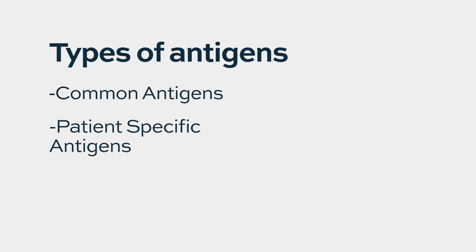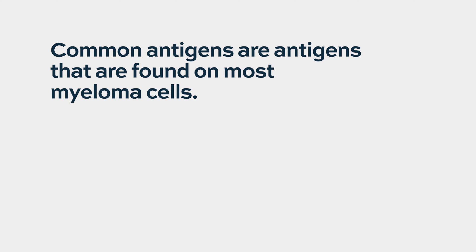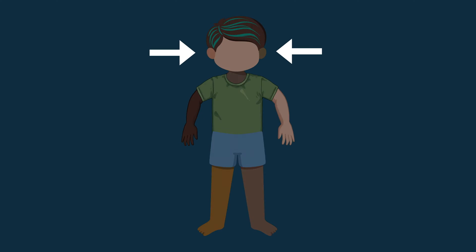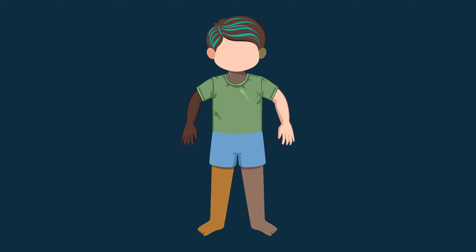There are common antigens, and then there are patient-specific antigens. The common antigens would be like saying, if we take all myeloma patients, roughly 60-70% of them have things in common. That would be like saying if we take a population of individuals, they all have a head and two arms and two legs and two ears. But then we have to ask ourselves, are those heads and arms and ears all the same? And that's where you get these differences.